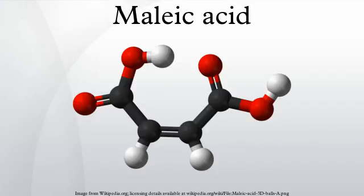Maleic acid, or cis-butenedioic acid, is an organic compound that is a dicarboxylic acid — a molecule with two carboxyl groups. Its chemical formula is HO2CCH=CHCO2H. Maleic acid is the cis-isomer of butenedioic acid, whereas fumaric acid is the trans-isomer. It is mainly used as a precursor to fumaric acid, and relative to its parent maleic anhydride, maleic acid has few applications.